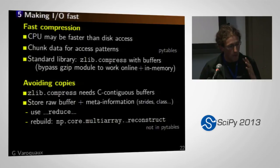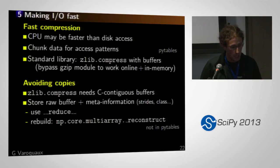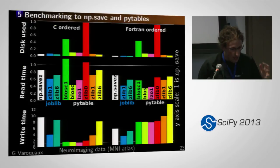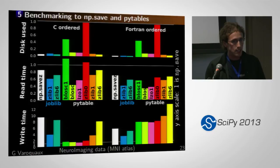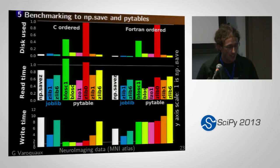How do we make I/O fast? You use compression because CPUs are getting faster than disk. You chunk data for the right access pattern — PyTables is really good at this. I'm relying on the standard library compressor Zlib: it's not fast, but reasonably good. One trick: it needs C-contiguous buffers, so to avoid flipping a Fortran array, you store the buffer separately from the metadata. Comparing to PyTables, the performance is dependent on the kind of data, but it gets close to PyTables — especially with Fortran-ordered data — and it has no dependencies beyond the standard library.